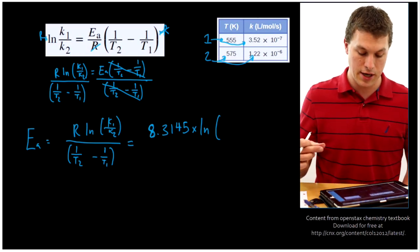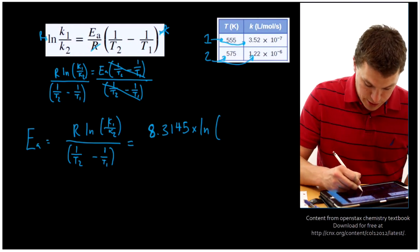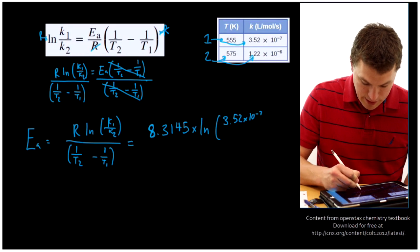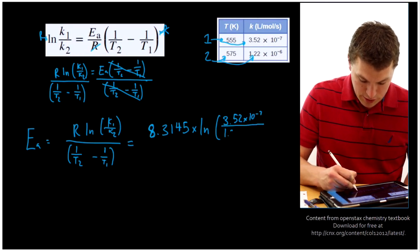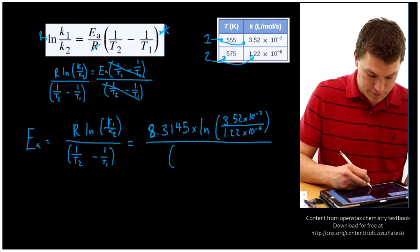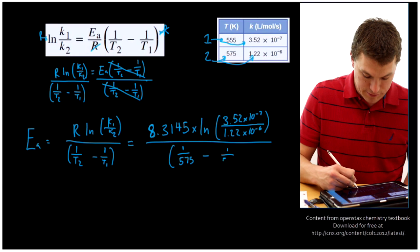So we'll put k1, which is 3.52 times 10 to the minus 7, and we'll divide that by 1.22 times 10 to the minus 6, all over that temperature difference, which is 1 over T2. Remember our T2 is 575, minus 1 over our T1, which is 555.